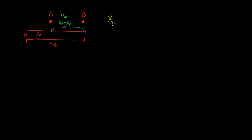This is the relative position coordinate of B with respect to A, and we can write this as XB over A. So we have the equation: XB/A is equal to XB minus XA. This holds true whenever you see a subscript like this — the first subscript B is your first term, and the second subscript A is the second term.